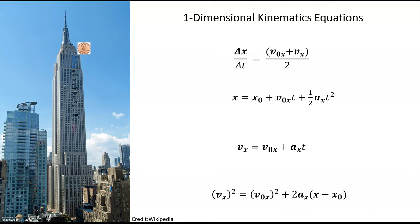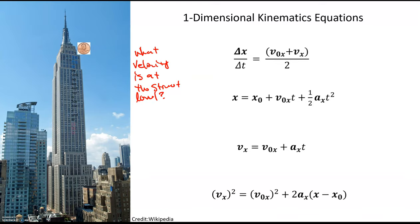The physics side of what the Mythbusters team did was they needed to determine what the velocity is at street level. To determine that velocity, you need to use the kinematics equations. These kinematics equations in one dimension describe the motion of an object, building off the ideas from module one. These equations are valid for constant acceleration — if the acceleration is not changing, then these kinematics equations apply.